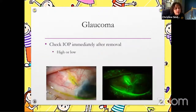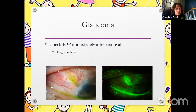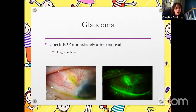Here's an example of a tube shunt erosion. You need to make sure that you are always checking for tube shunt erosions. You want to check IOP immediately after lens removal to make sure that you have not increased the intraocular pressure in the eye, or conversely, if you have eroded, you want to make sure that the pressure isn't too low.